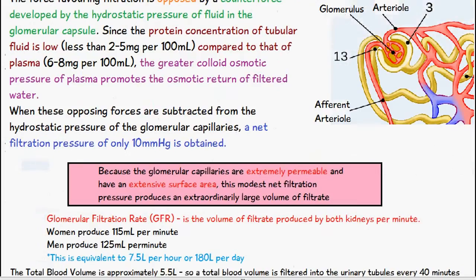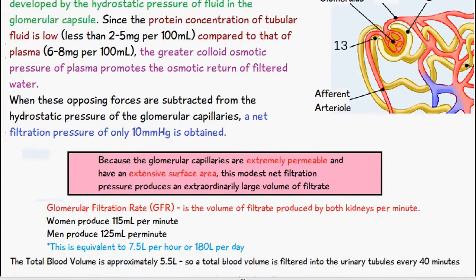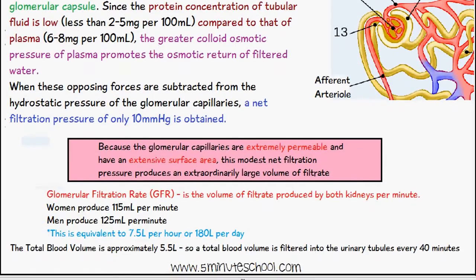Now we can go on to measure this. We have the glomerular filtration rate abbreviated as GFR and this is the volume of filtrate which is produced by both kidneys per minute. In women they produce 115 milliliters per minute and men produce 125 milliliters per minute.